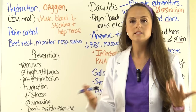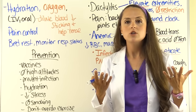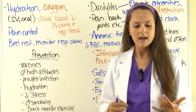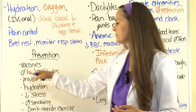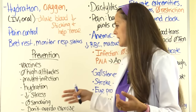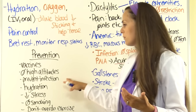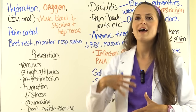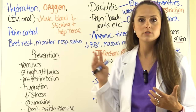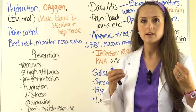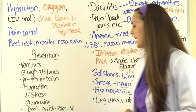To prevent a sickle cell crisis, educate patients or parents: get vaccinations up to date — especially pneumococcal, influenza, and meningococcal. Avoid high altitudes — no climbing or flying. Prevent infection through hand hygiene, taking prophylactic penicillin if ordered, and staying away from sick people. Stay well hydrated, especially on hot days or when exercising — drinking fluids must be a priority. Keep stress levels low, avoid smoking, and don't overdo exercise.